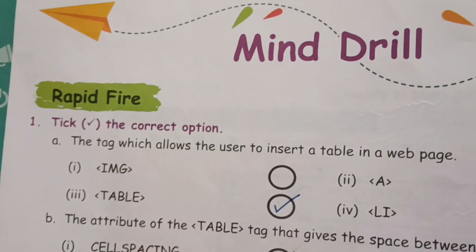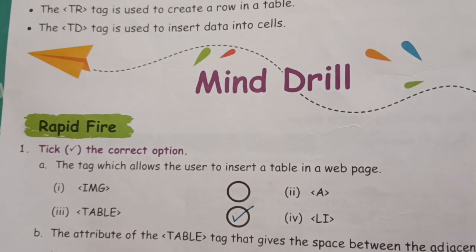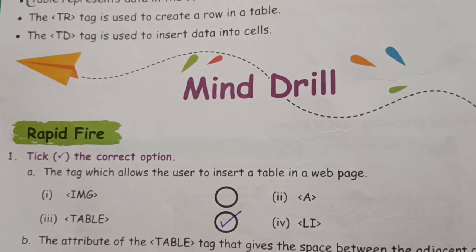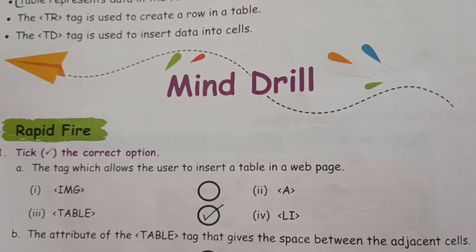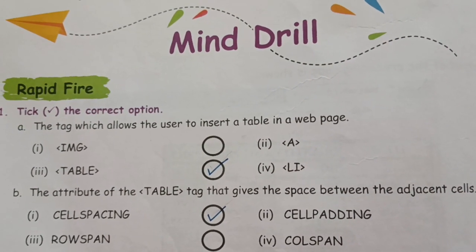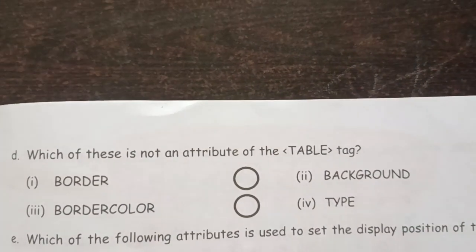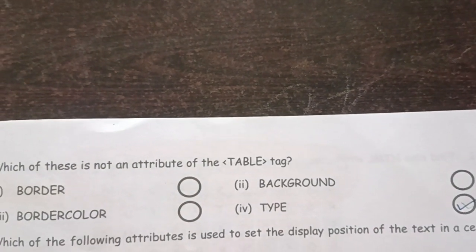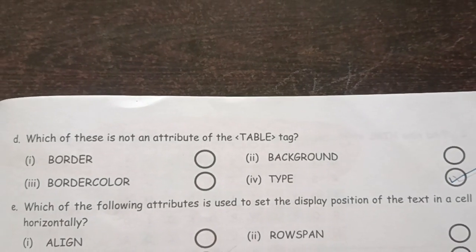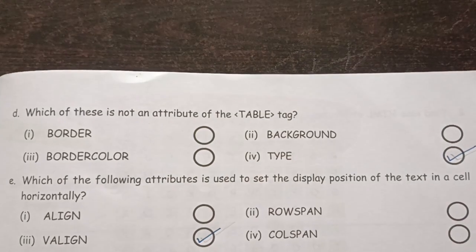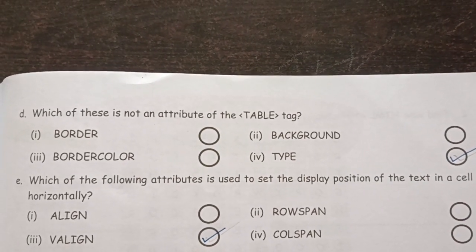The first question in Mind Drill is: the tag which allows the user to insert a table in a web page is the table tag. The attribute of the table tag that gives the space between the adjacent cells is cell spacing. Next question: which of these is not an attribute of the table tag — the correct answer is type. Which attribute is used to set the display position of text in a cell horizontally — the correct option is VALIGN.